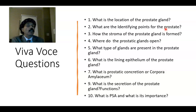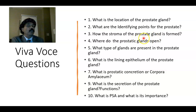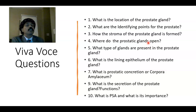What is the importance of corpora amylacea? We do not know exactly, but it may be part of the aging process. How is the stroma of the prostate gland formed? It is formed by fibrous tissue and smooth muscle — that is fibromuscular stroma. Where do the prostatic glands open? The posterior glands open into the prostatic urethra.